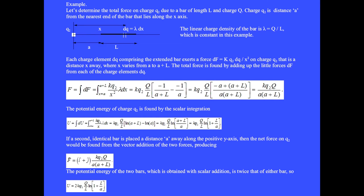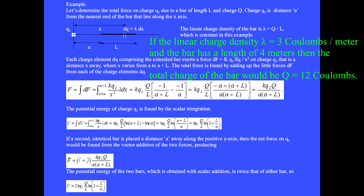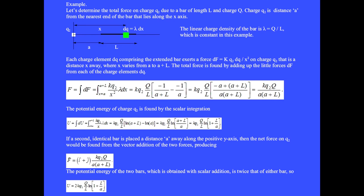For example, let's determine the total force on charge Q2 due to a bar of length L and charge big Q. Charge Q2 is distance A from the nearest end of the bar that lies along the x axis. The linear charge density of the bar is lambda equals big Q over L, which is constant in this example. If lambda equals 3 coulombs per meter and the bar has length 4 meters, then the total charge is 12 coulombs. The differential charge dQ in a segment of length dx is dQ equals lambda dx.